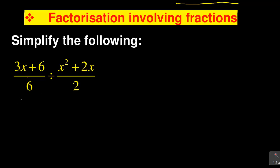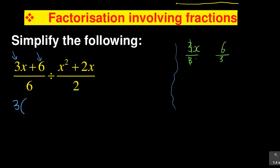That is why the topic is called factorization — you need to factorize first. Look at the first fraction's numerator: in 3x + 6, you can see that 3 is the common factor. Dividing both terms by 3: 3x ÷ 3 = x, and 6 ÷ 3 = 2. So 3x + 6 factorizes to 3(x + 2).